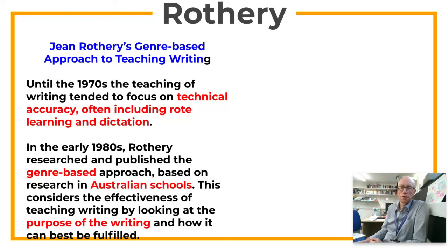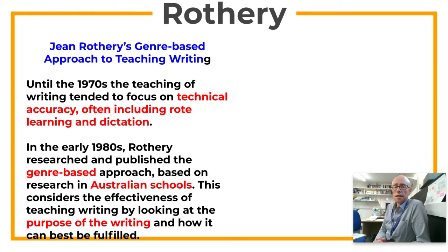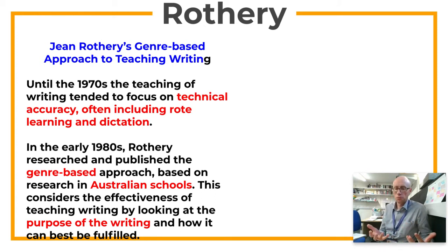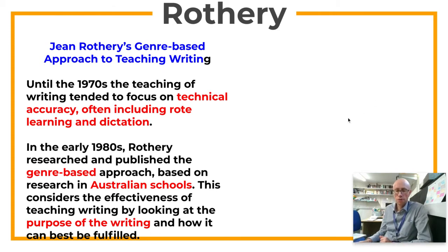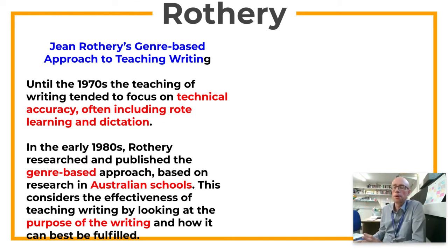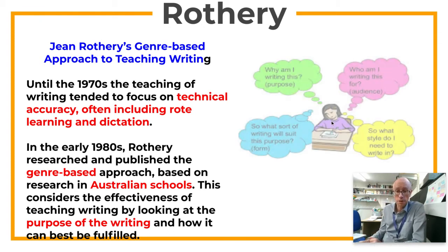We now move on to Jean Rothery, an Australian who looked at the kind of writing going on in primary schools in Australia in the 1980s. Until the 1970s, the teaching of writing tended to focus on technical accuracy — a lot of it was about rote learning, which means learning by heart, and dictation, just writing down things that the teacher was telling you. Rothery published quite an influential report about genre-based approaches going on in Australian schools, which considered the effectiveness of teaching writing by looking at purposes and how those purposes can be best fulfilled. It's trying to move children away from seeing writing as a mechanistic thing, linking in — a bit like the Vygotsky argument — that the purposes and motivations behind the writing are absolutely crucial to success.